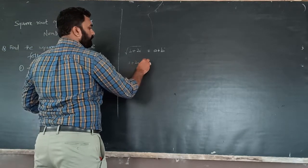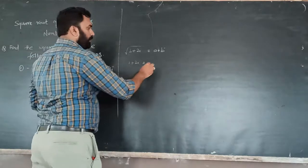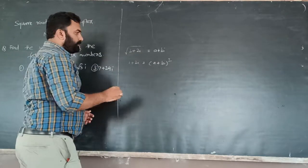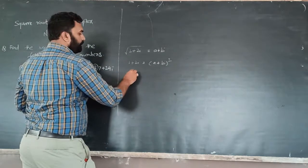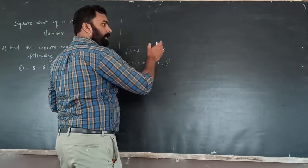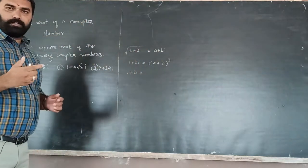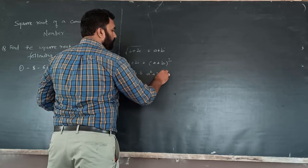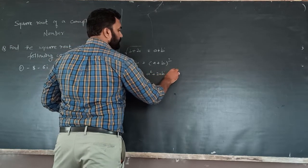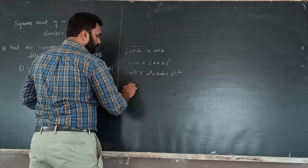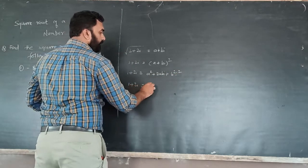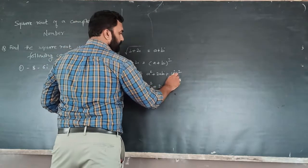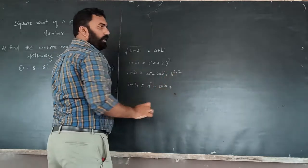1 plus 2i is equal to (a plus bi) bracket squared. Expanding this, we get a squared plus 2abi plus b squared times i squared.